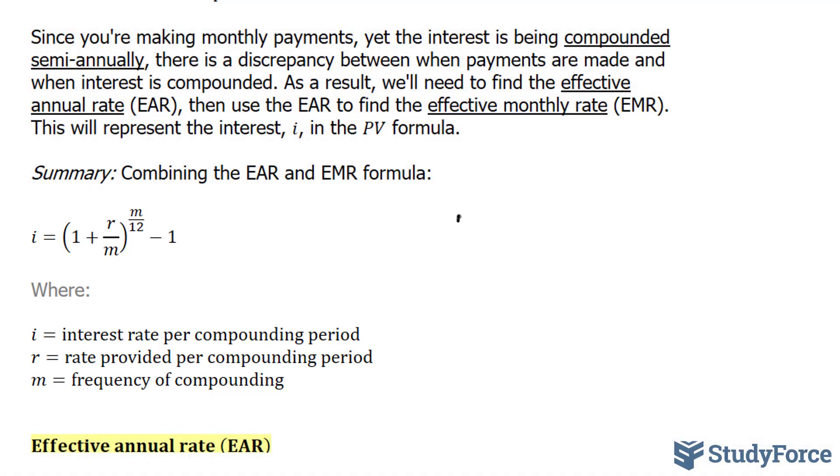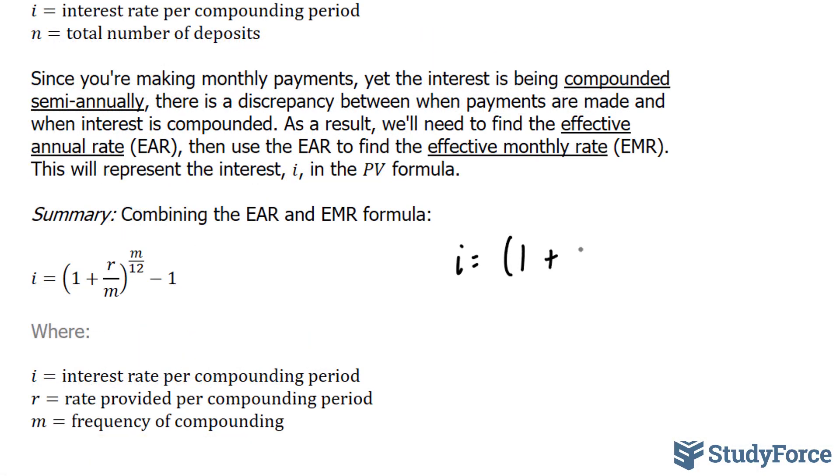So let's figure out our i value. i is equal to bracket 1 plus r, which according to our question is 2.21%. Now of course we can't use percentage. We need to use the decimal version of this number, so we're going to take this number and divide it by 100. And this gives us 0.0221, representing our r. I'm going to replace that with the r that we had here: 0.0221 divided by m. And m represents the frequency of compounding. Since it's semi-annually, m is 2, twice a year. To the power of m, which is once again 2, divided by 12, which represents the number of months in a year, minus 1.